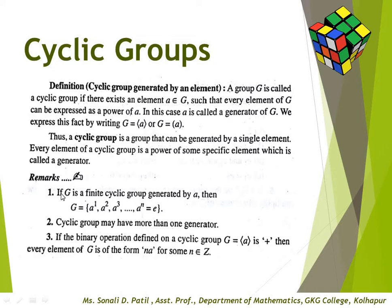There are some remarks. First remark: if G is a finite cyclic group generated by A, then G = {A¹, A², A³, ..., Aⁿ = E}, where E is the identity element. Second remark: a cyclic group may have more than one generator. Third remark: if the binary operation on G is addition, then every element of G is of the form nA for some n belonging to Z.